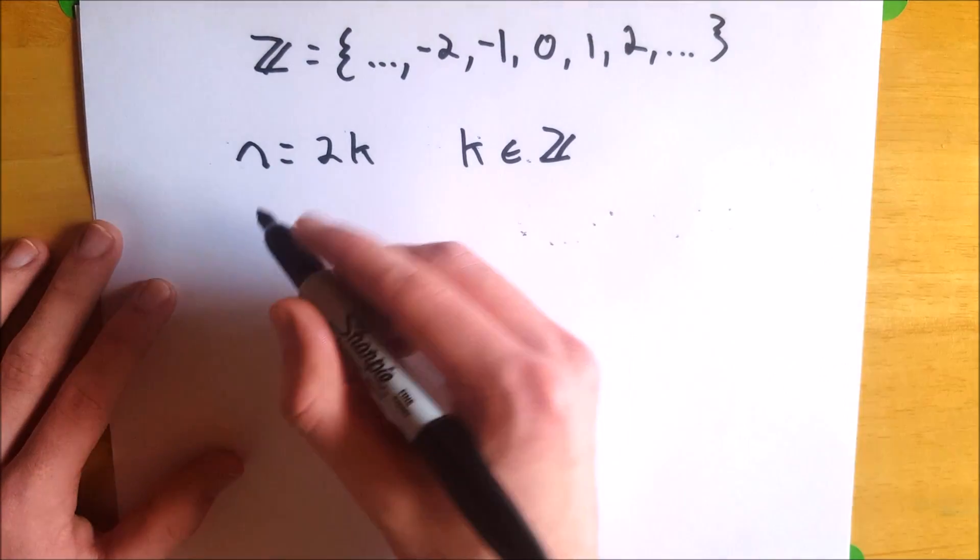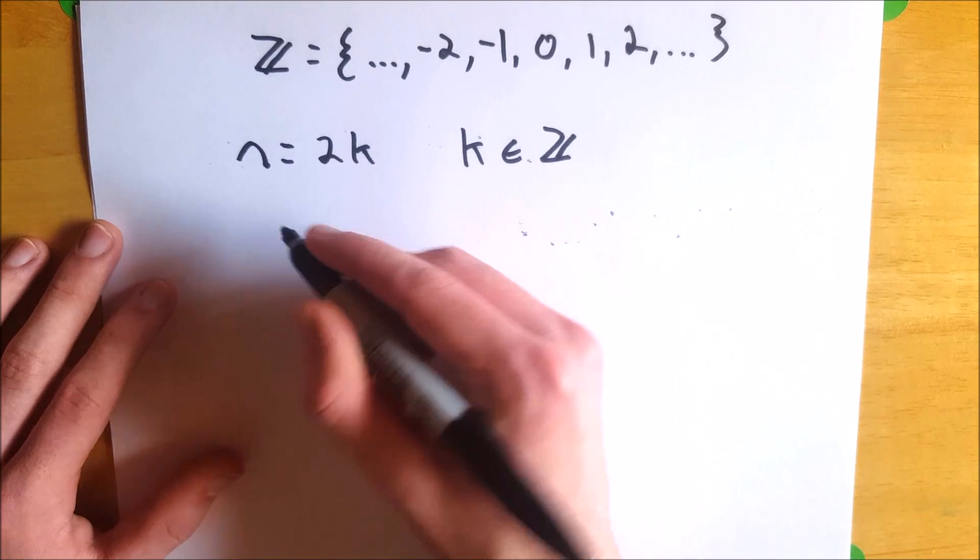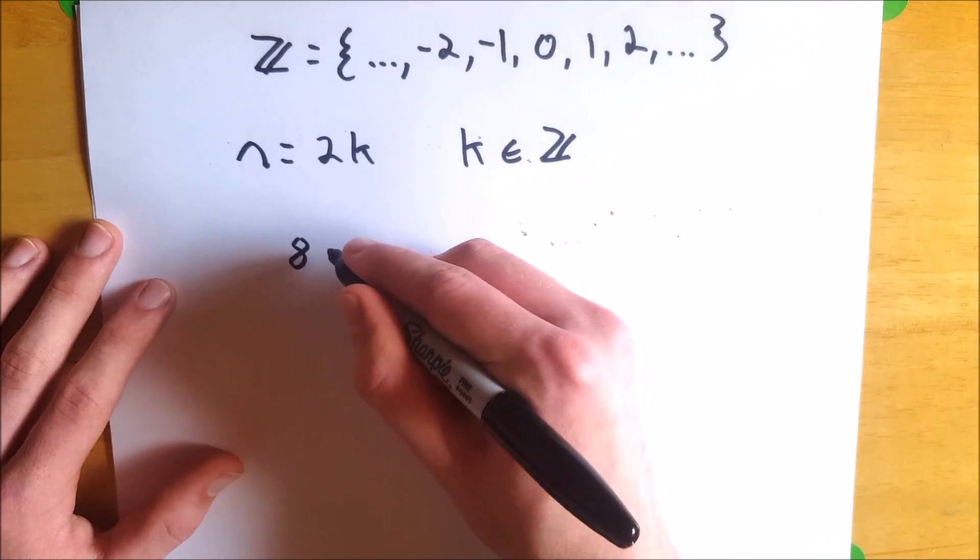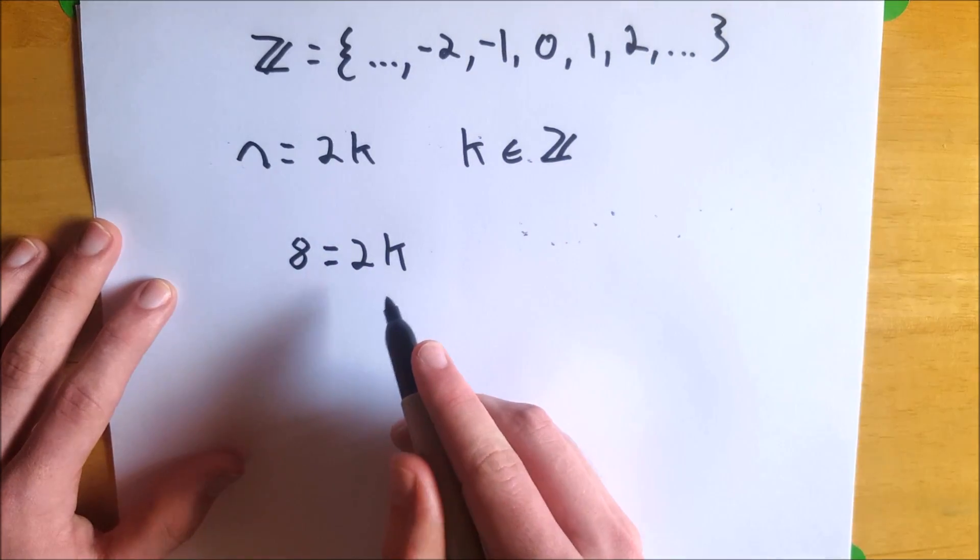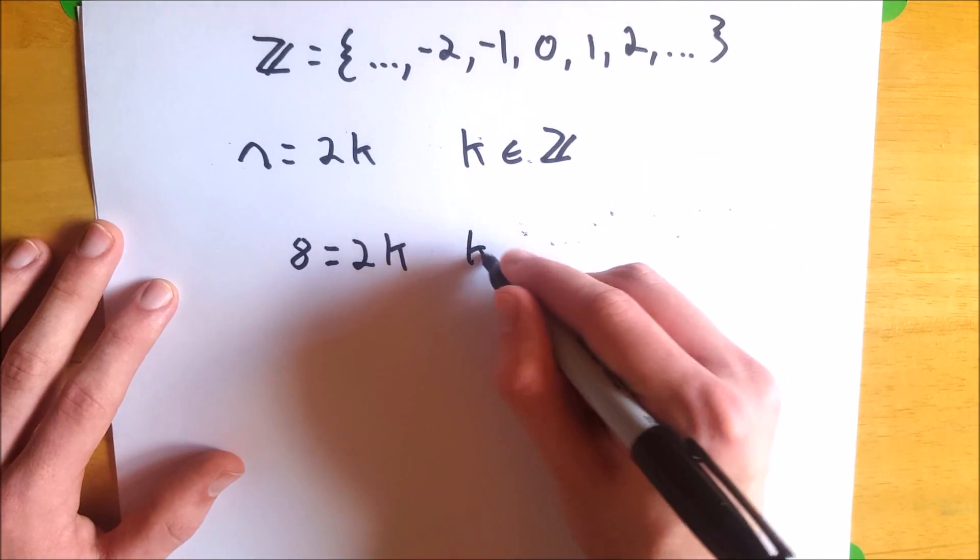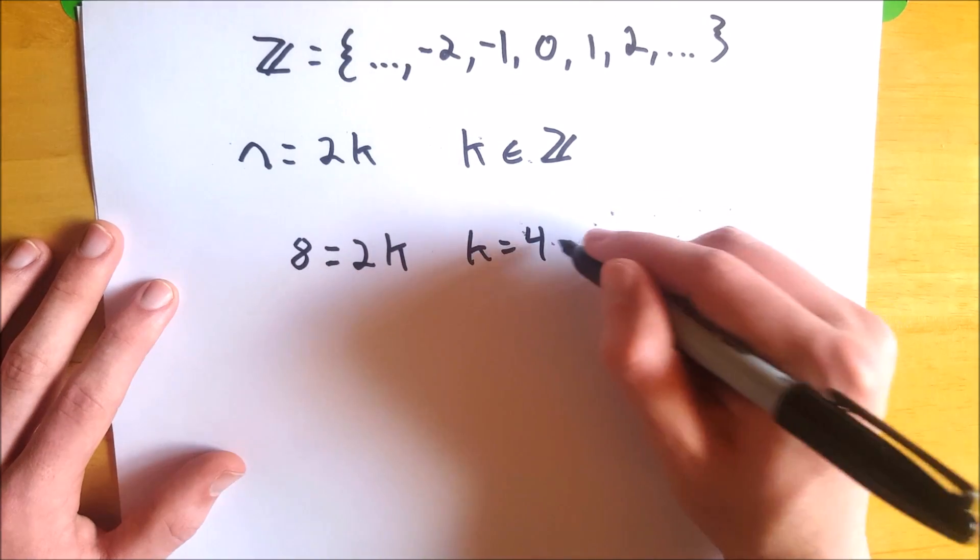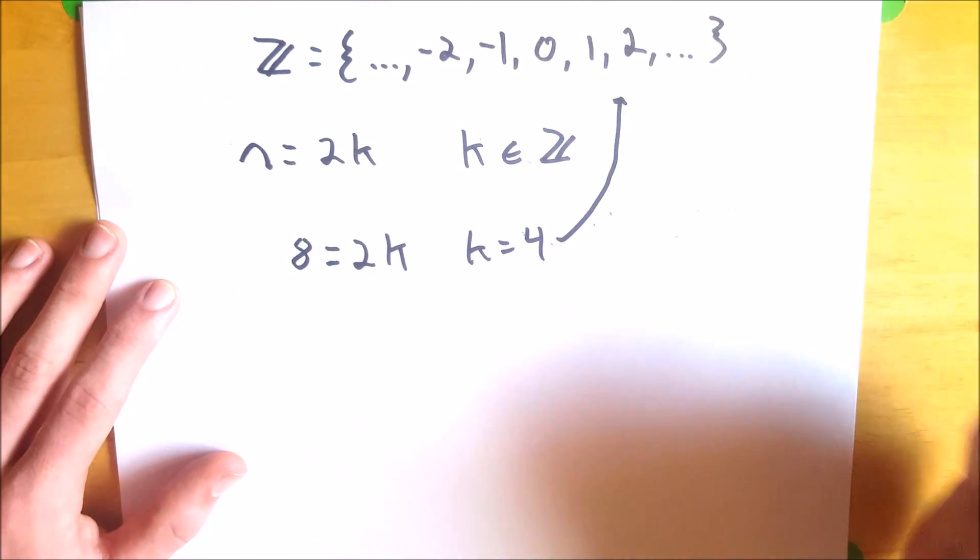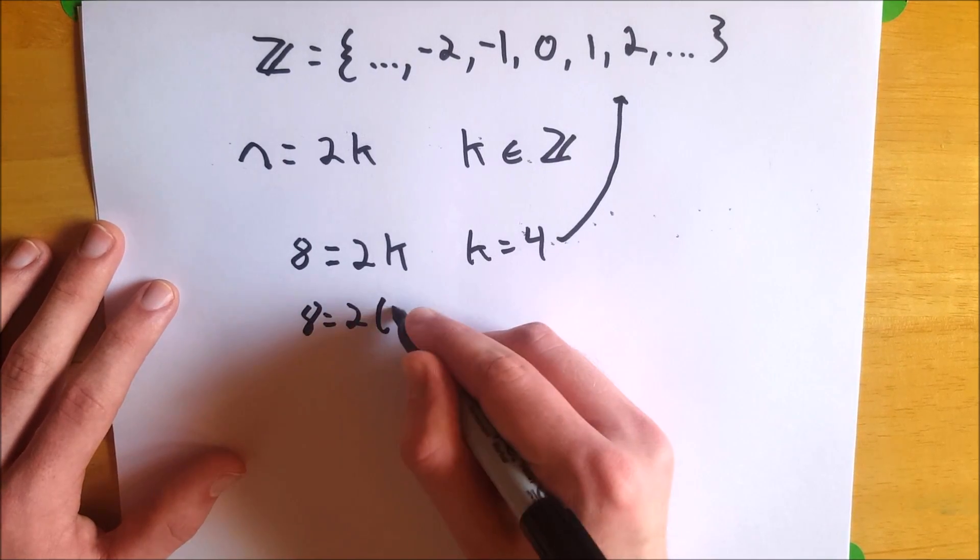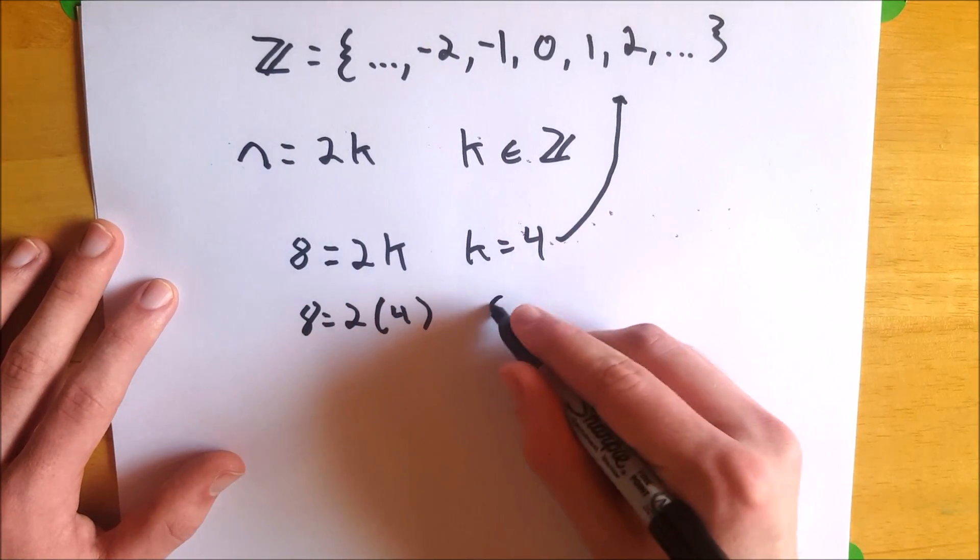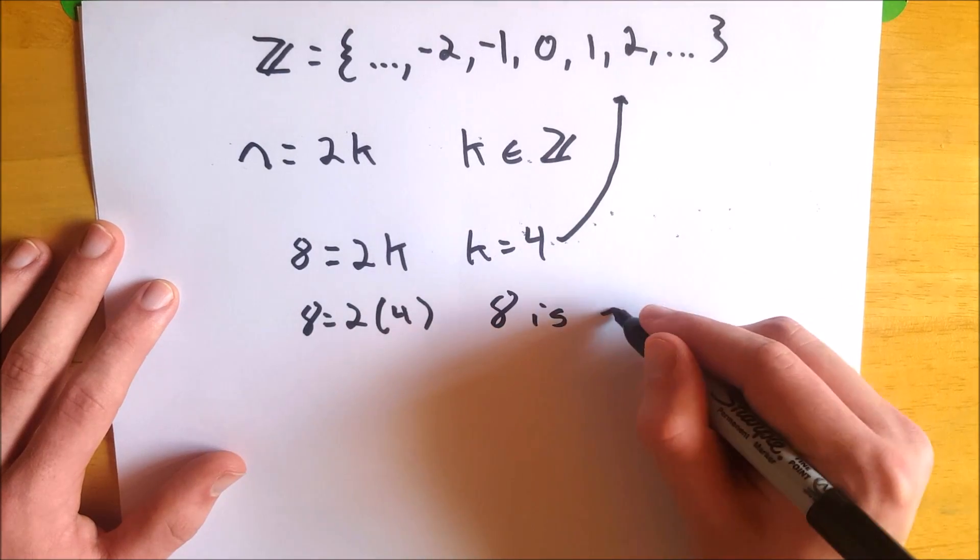Let's try that with an even number, say 8. If n equals 8, then 8 equals 2k, so what would k equal in this case? k would equal 4, which is indeed an element of the integers. So 8 equals 2 times 4, and therefore 8 is even.